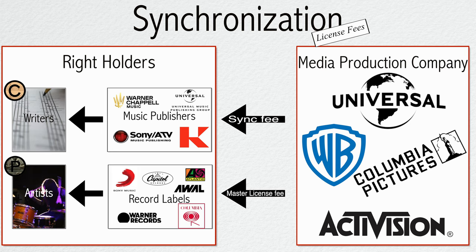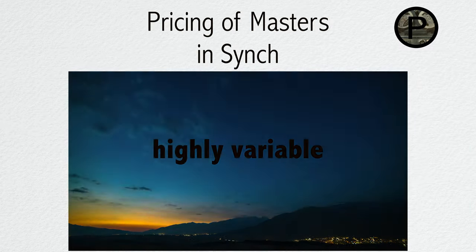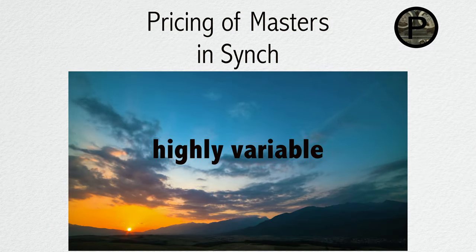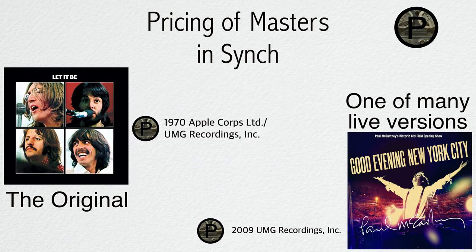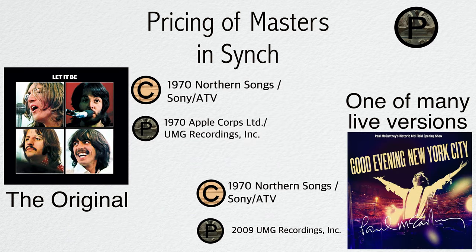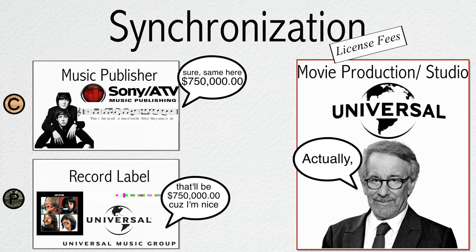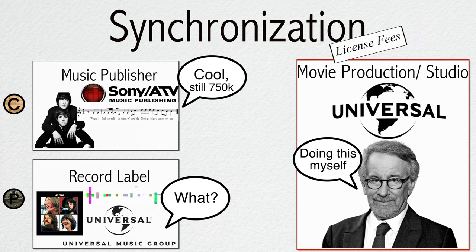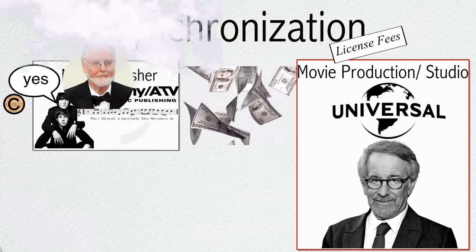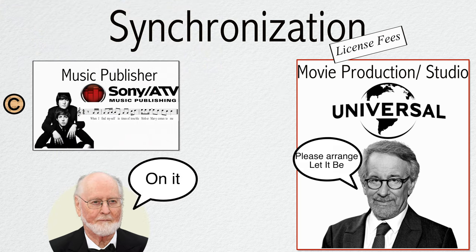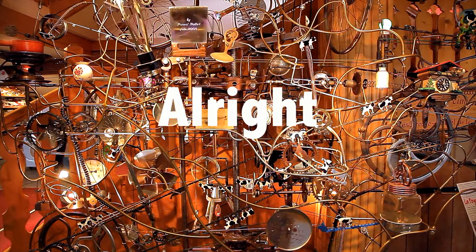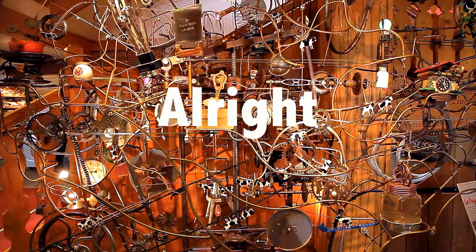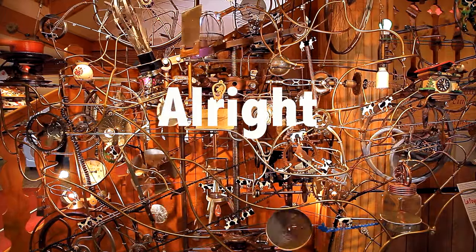It is also important to note that the prices of the masters can vary immensely, as some recordings are unique and others aren't. The copyright, on the other hand, is always the same and therefore more flexible — Spielberg could clear only the rights for the composition and arrange a new sound recording of the song specifically for the scene. Thanks for putting up with this complex web of royalties, fees, rights, and entities.